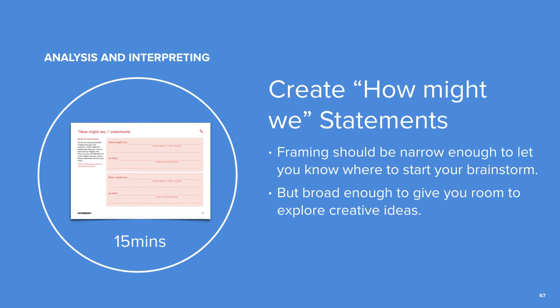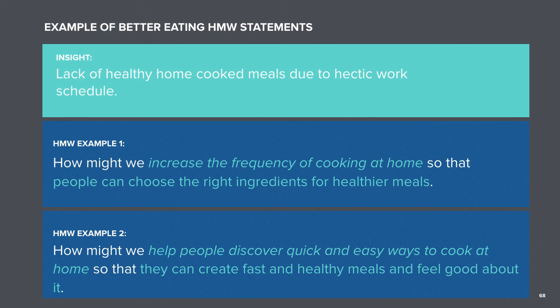You should now have insight statements for most, if not all, of your group themes. Next up is how might we statements. These are short sentences that we use to start brainstorming solutions. These statements encourage people to find solutions instead of focusing on what might be wrong. They should be narrow enough to let you know where to start your brainstorm, but broad enough to give you room to explore creative ideas.